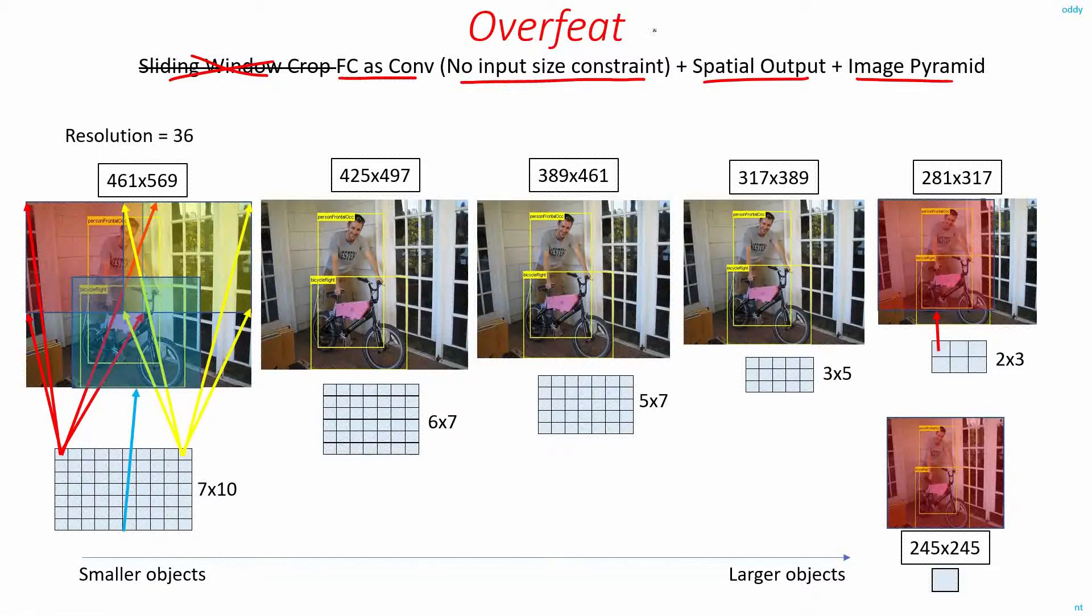In OverFeat, they used image pyramids of six different scales. These are the dimensions of those six different scales. And they did the convolution, and we can see the spatial output dimensions here. They used the same AlexNet architecture, but modified it slightly so that the receptive field of this network was 245 by 245.